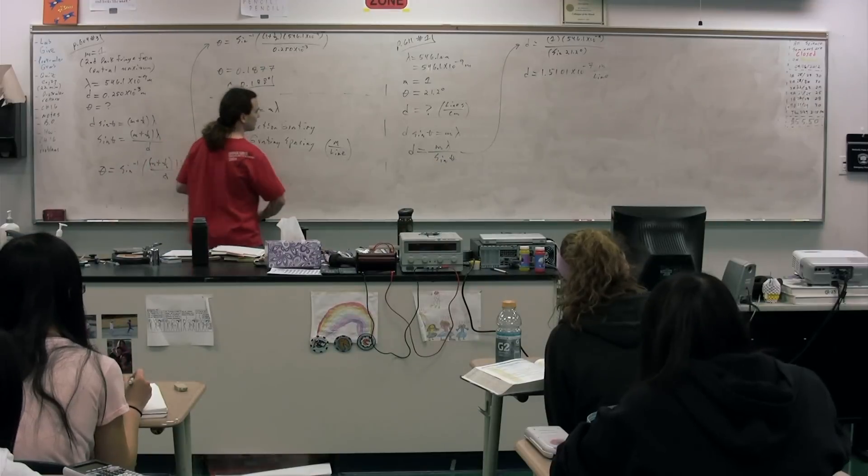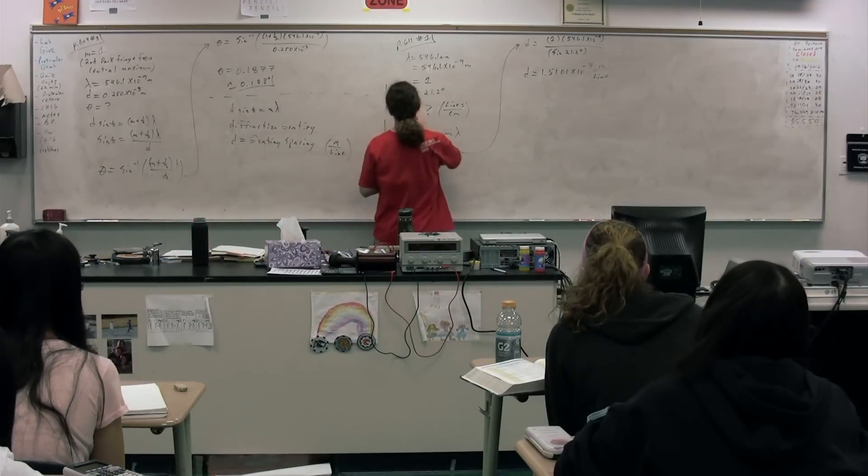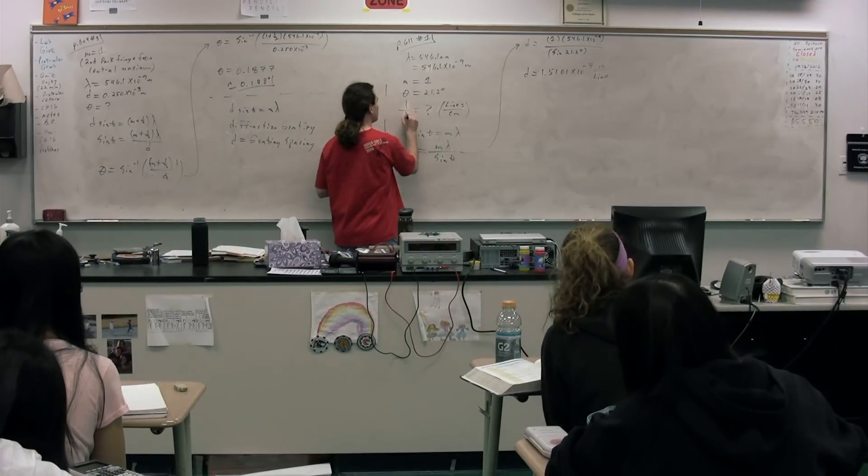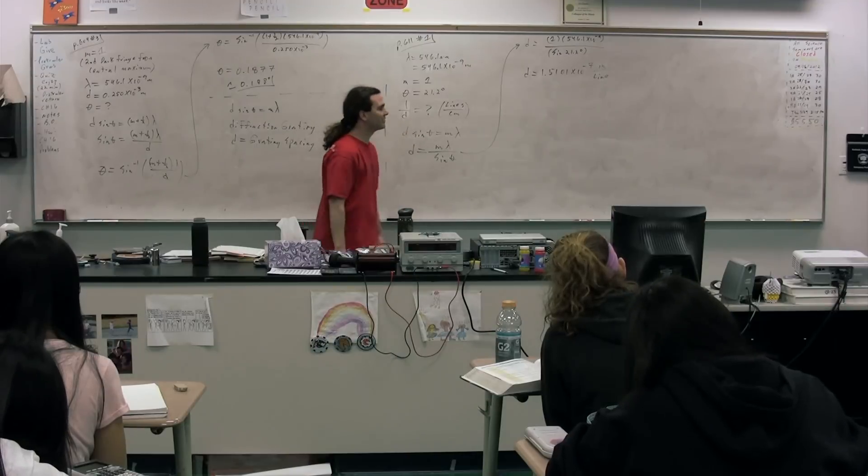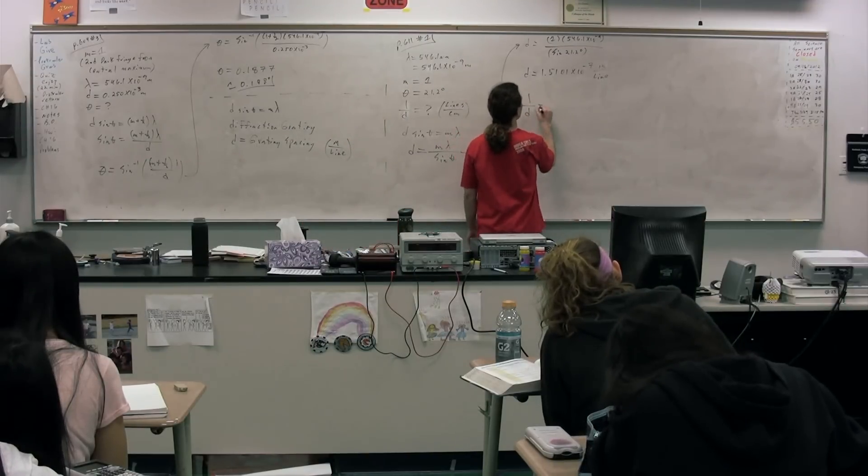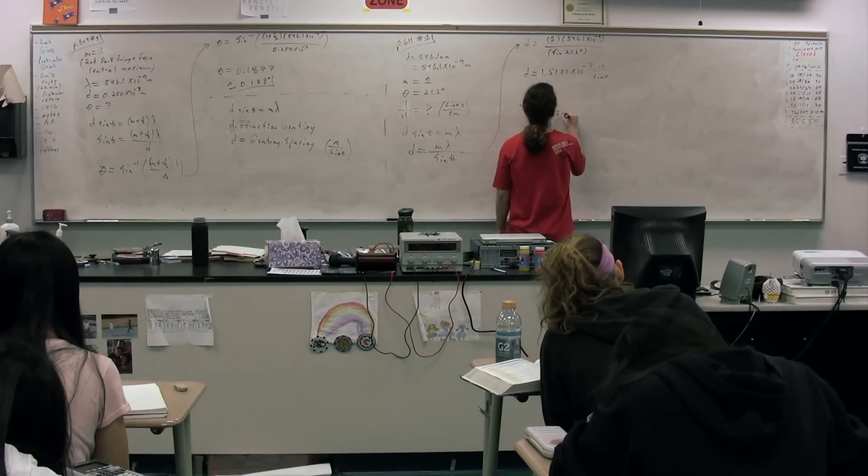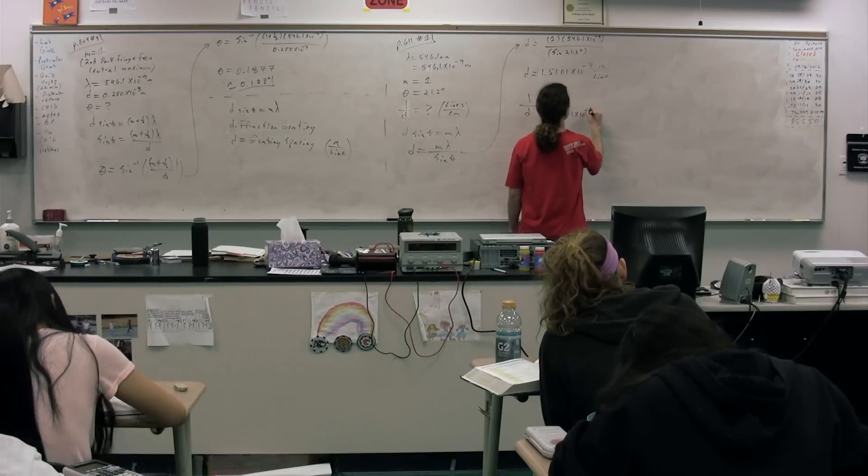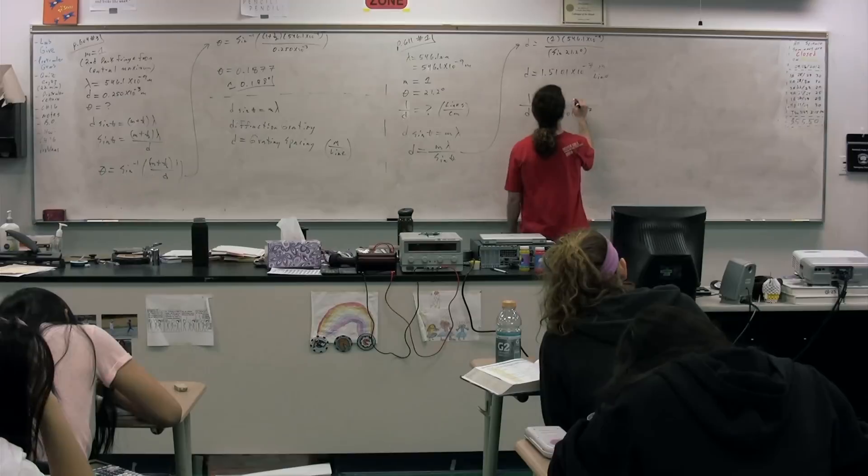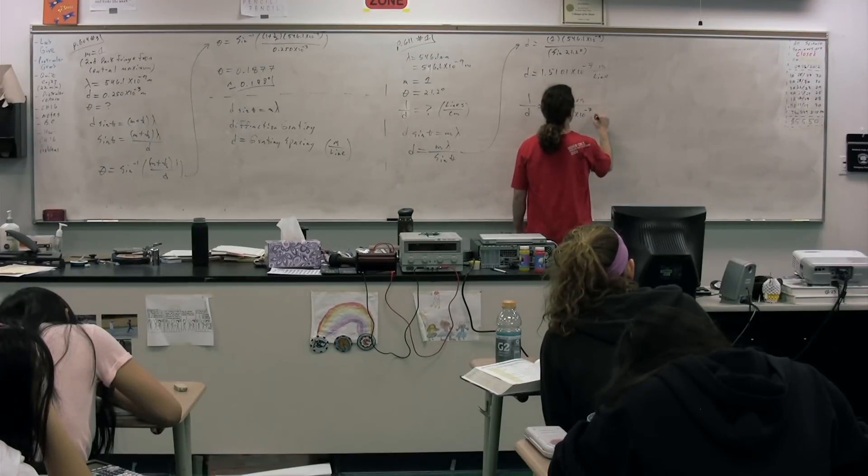They've asked for lines per centimeter, which is not D. Well, D is the grating spacing. I don't care. They've asked for 1 over D, the number of lines per centimeter. So we need to take 1 over D. So that's going to be 1 divided by 1.5101 times 10 to the negative 7. And that would be lines on the top and meters on the bottom.